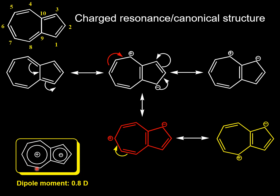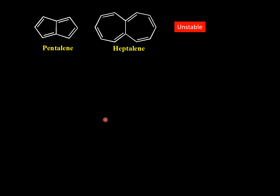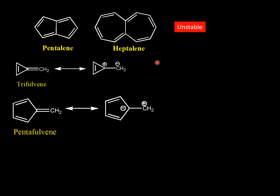This is the resonance hybrid structure of azulene, which involves the fusion of a cyclopentadienyl anion and a cycloheptatrienyl cation. In contrast to the significant contribution of azulene due to dipolar resonance structures, pentalene and heptalene are unstable compounds, likely due to the lack of resonance stabilization.